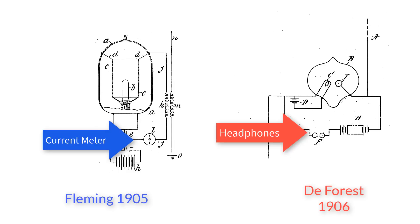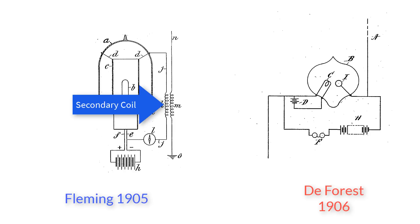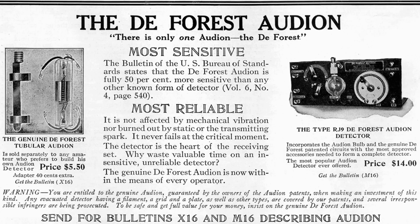First, de Forest used headphones instead of a current meter. Second, he added an extra battery that didn't seem to do much. Third, he didn't use parallel coils, at least in this circuit. And fourth, he incorrectly thought the trace amounts of gas in the bulb were ionized and that was what was causing the current to flow. So he insisted that the bulb not be a perfect vacuum. Because this device was used to make sound and he incorrectly thought it had to do with the ionization of gas, he dubbed this an audion.